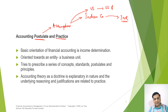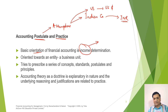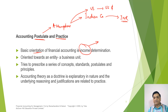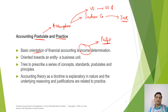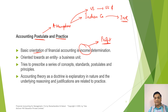The basic objective of financial accounting is to determine the income. Why? Because a business is nothing but an activity which is being performed to earn profit. The main motive is to earn profit. So the basic objective of any financial accounting would be to find out the profit out of the various transactions that have happened during the particular period.